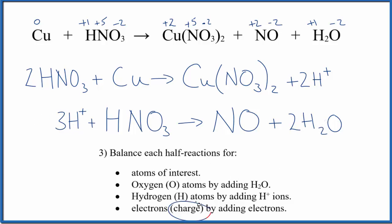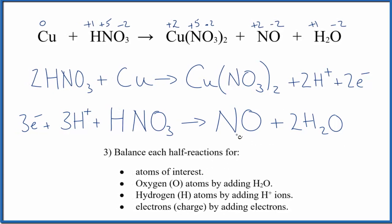Finally, we're going to balance charge, the number of electrons. I have a two plus here, so I'll add a two minus, two electrons. Zero on this side, net charge on here is zero. Here I have three plus, let's add three electrons. So the net charge here is zero, net charge here is zero. We've balanced the half-reactions at this point.